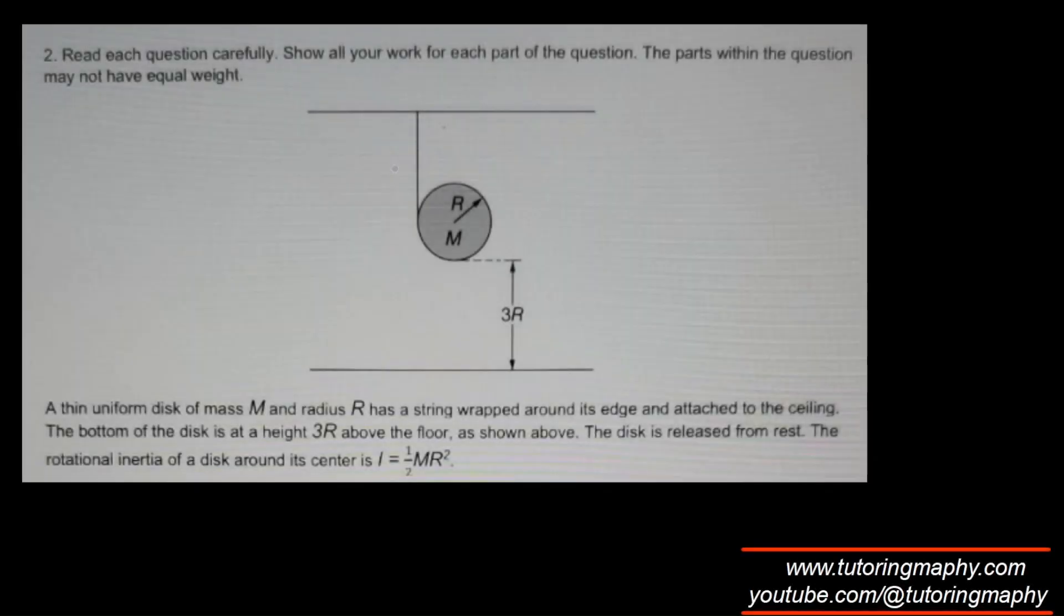All right guys, this is a nice FRQ on rotation. A thin uniform disk of mass M and radius R has a string wrapped around its edge and attached to the ceiling. The bottom of the disk is at 3R. This is R, this is M, and the moment of inertia is half MR squared.